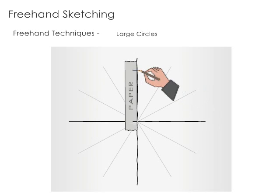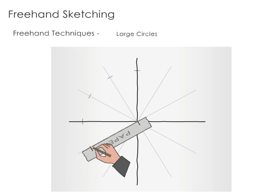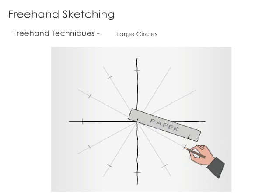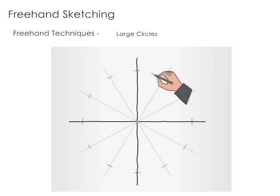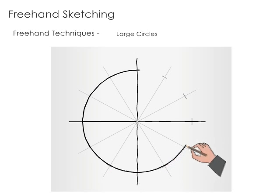Another method to draw large circles or arcs is to set off the radius on a strip of a paper. Use this radius to mark as many points from the center. Then one can sketch a smooth circle through these points.